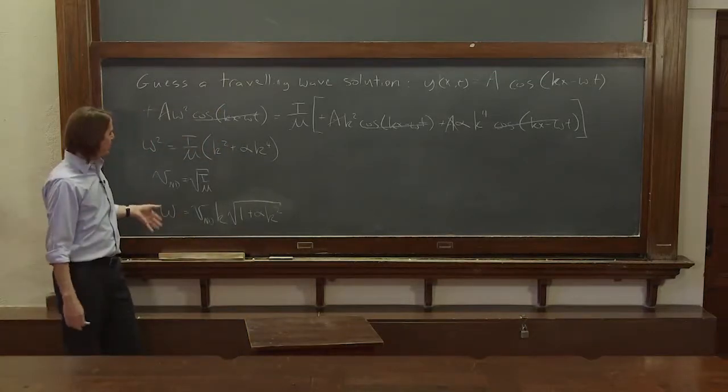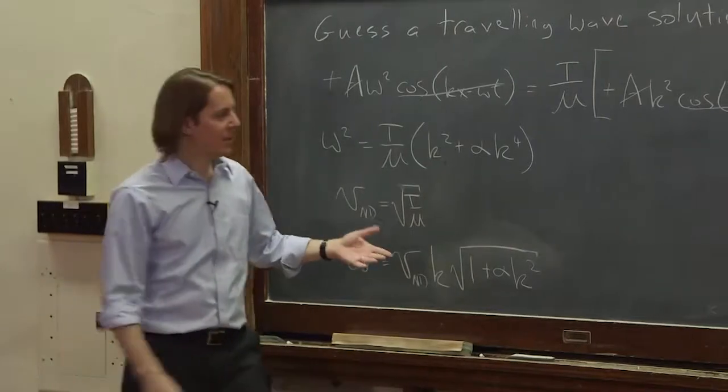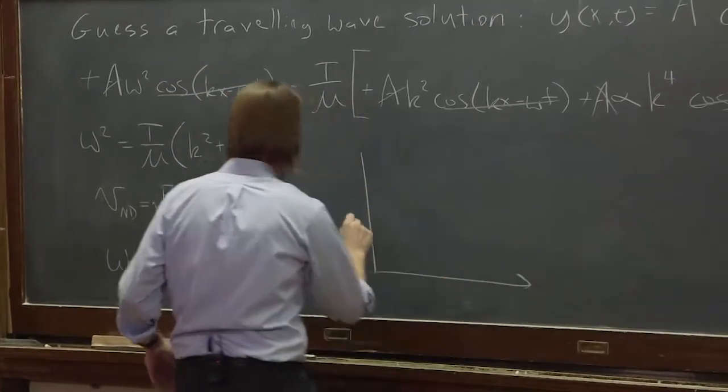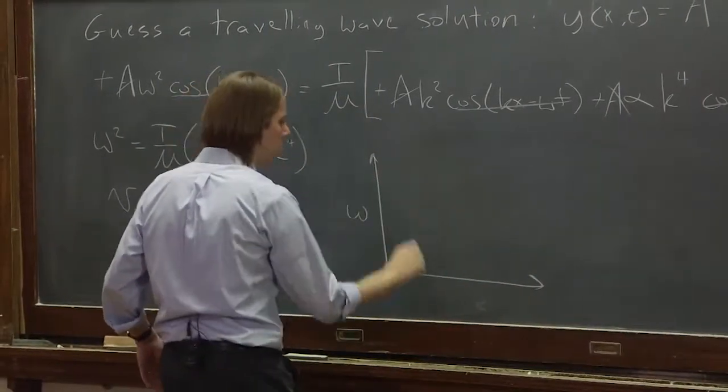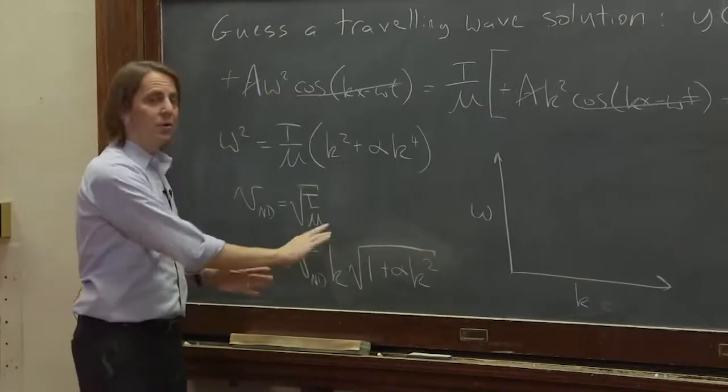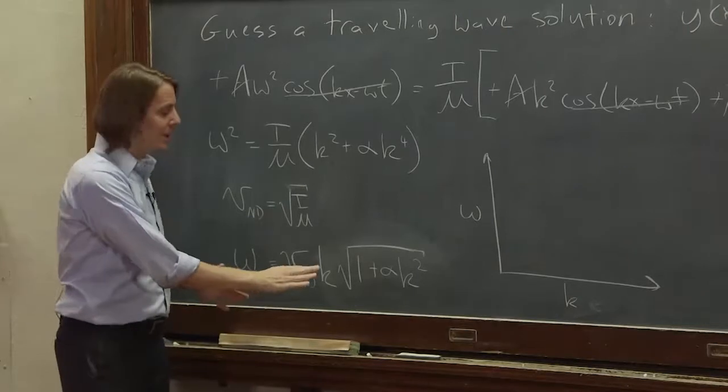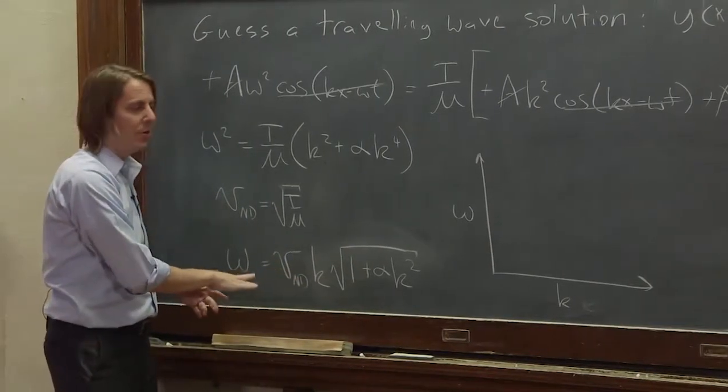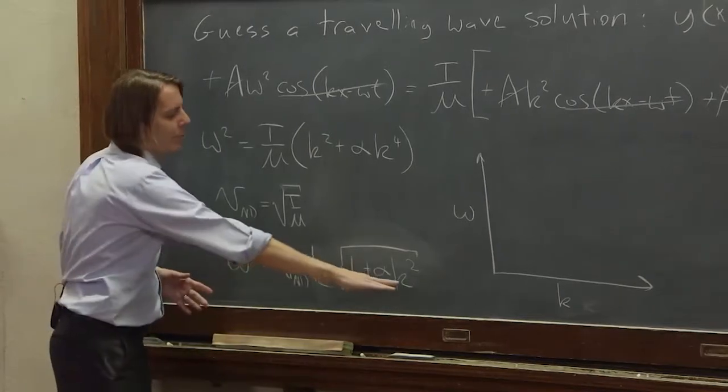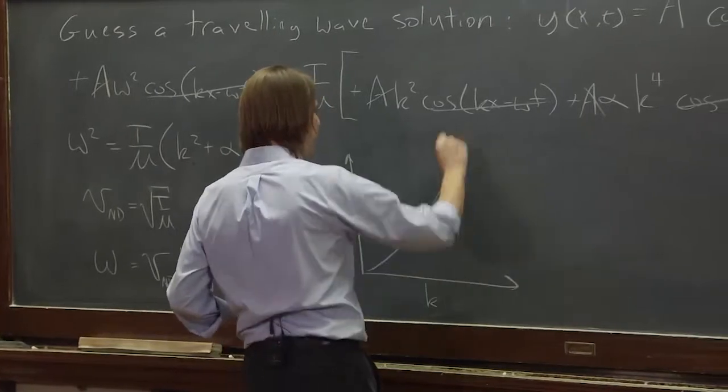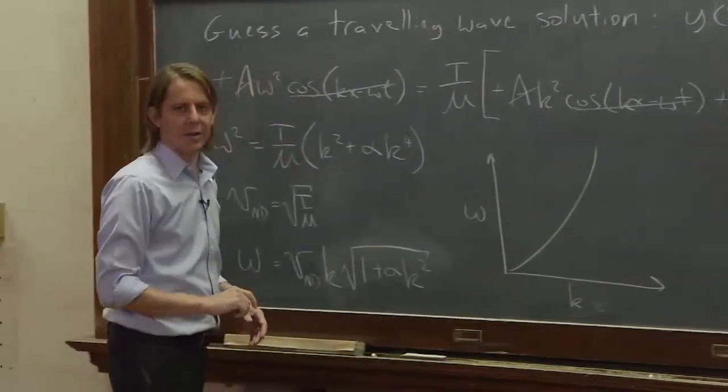So we've calculated the relationship between omega and k and we can plot it kind of like this. And you can see in the good old days of non-dispersive medium that this isn't here and v, of course, is a constant and it would be a line. But now we've got a more complicated equation here and basically what it does is rather than a line, it kind of goes up a little bit. Kind of like that.